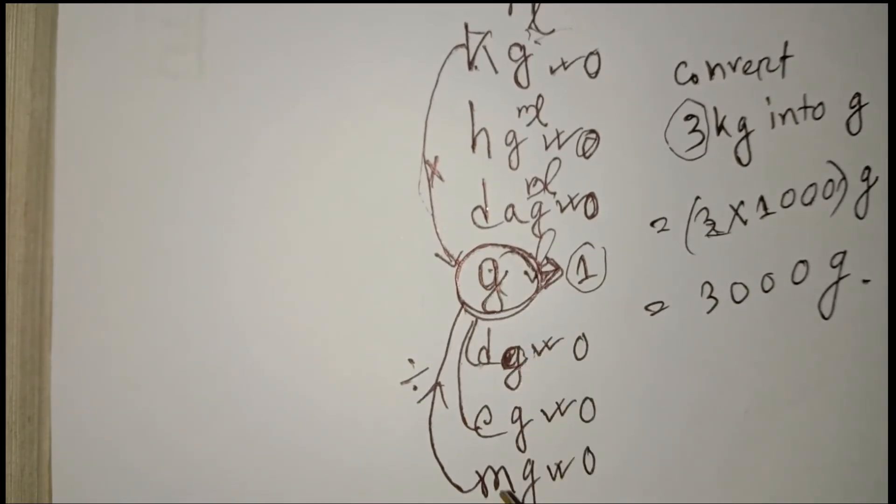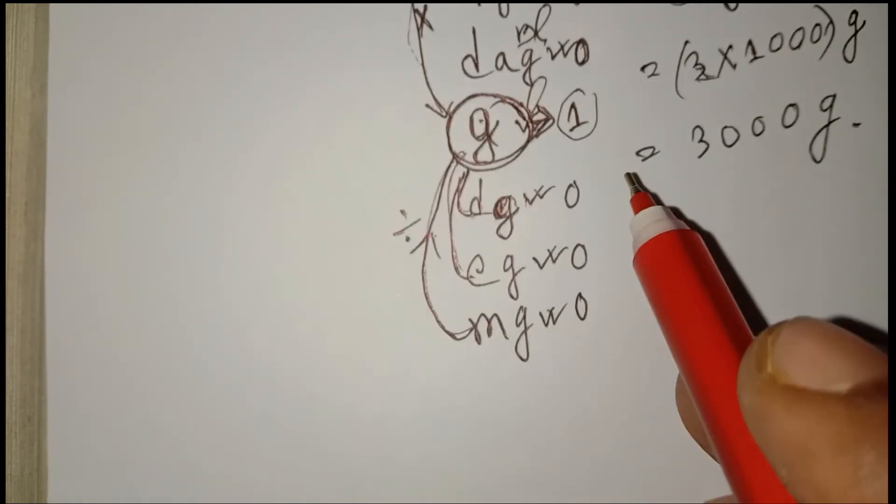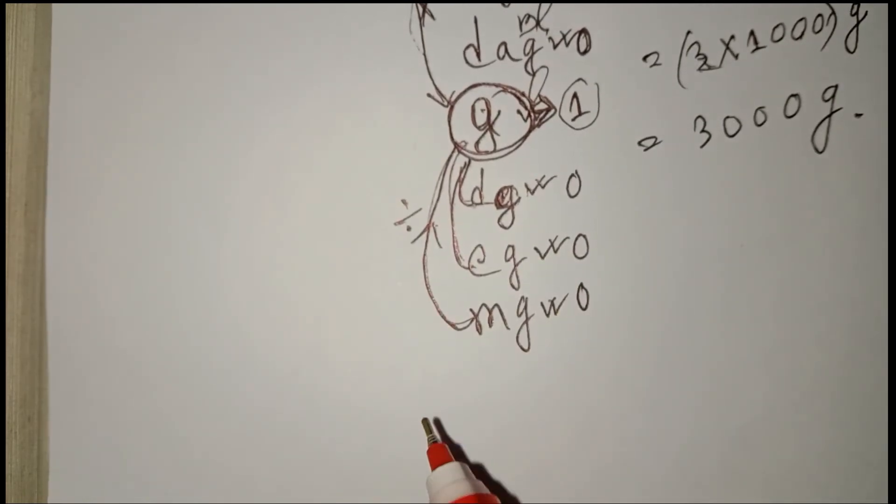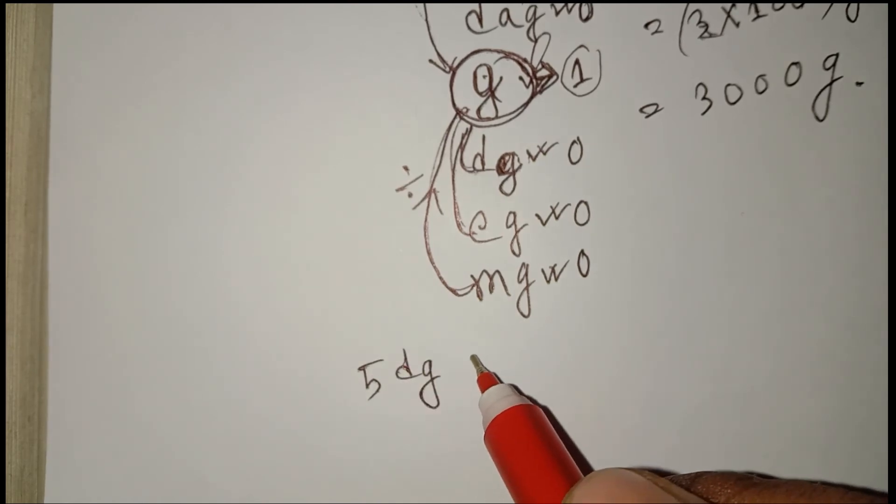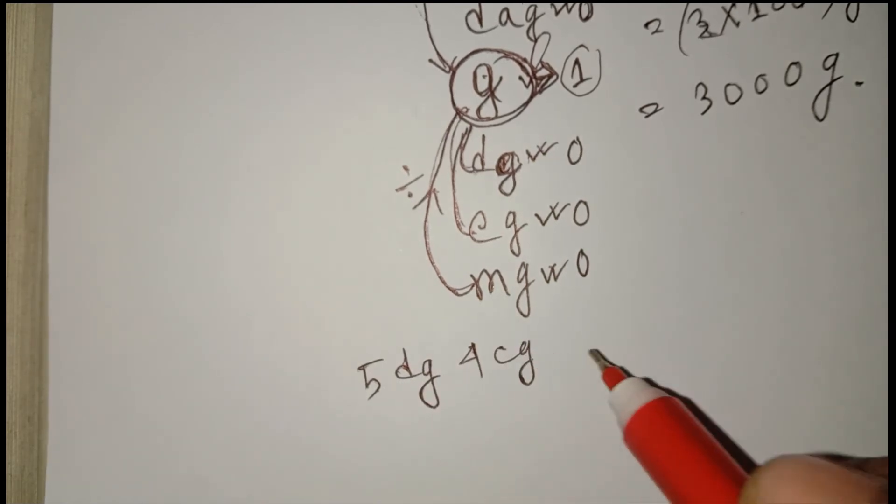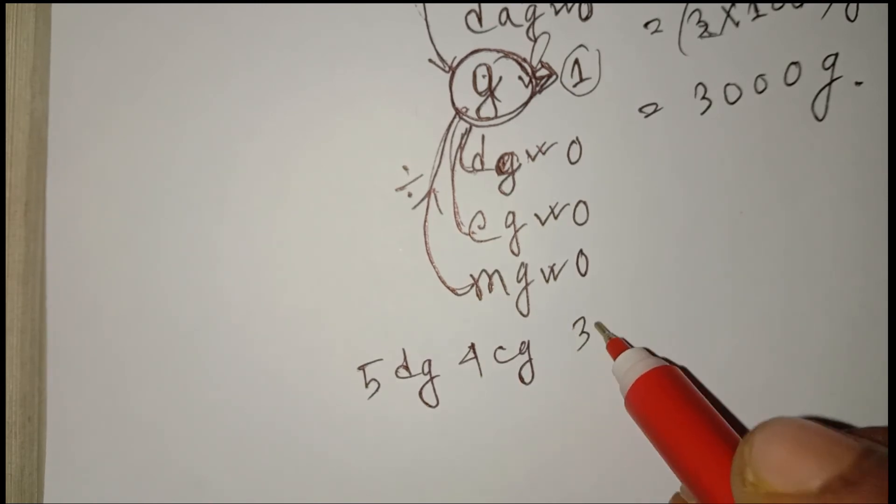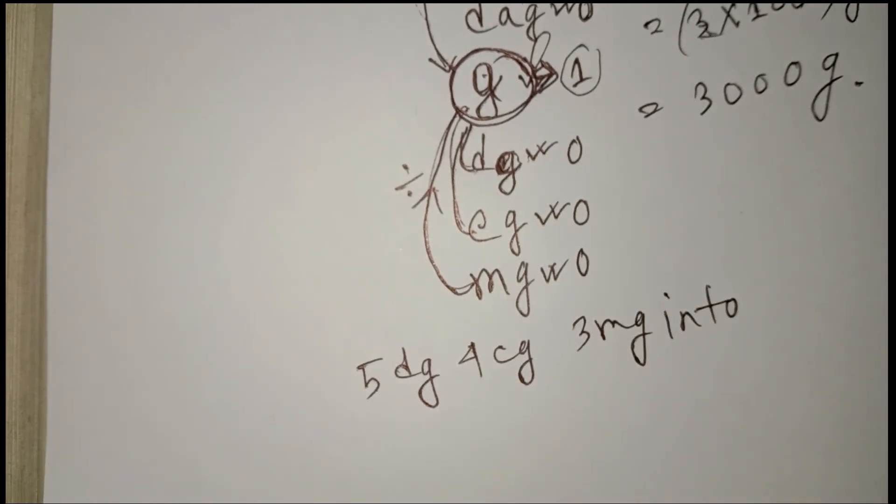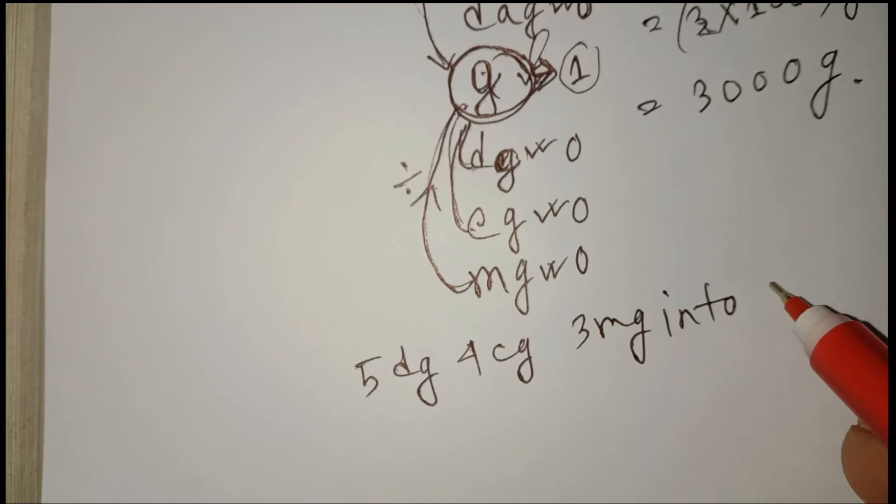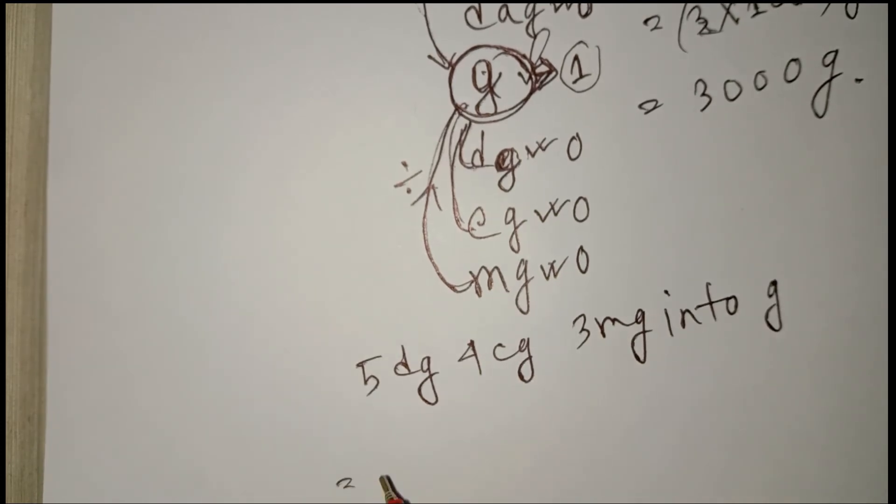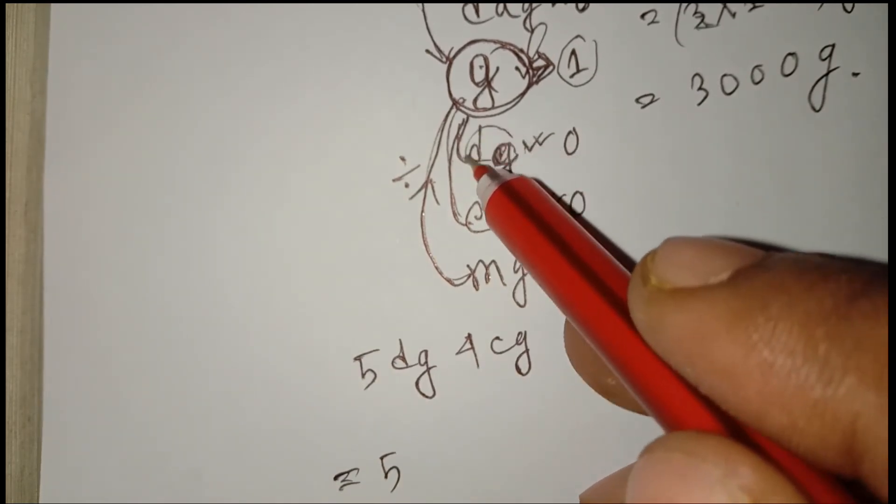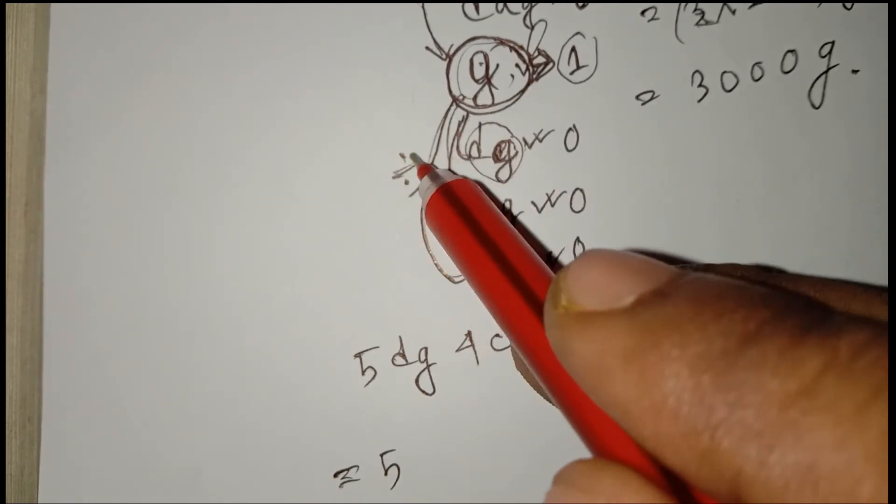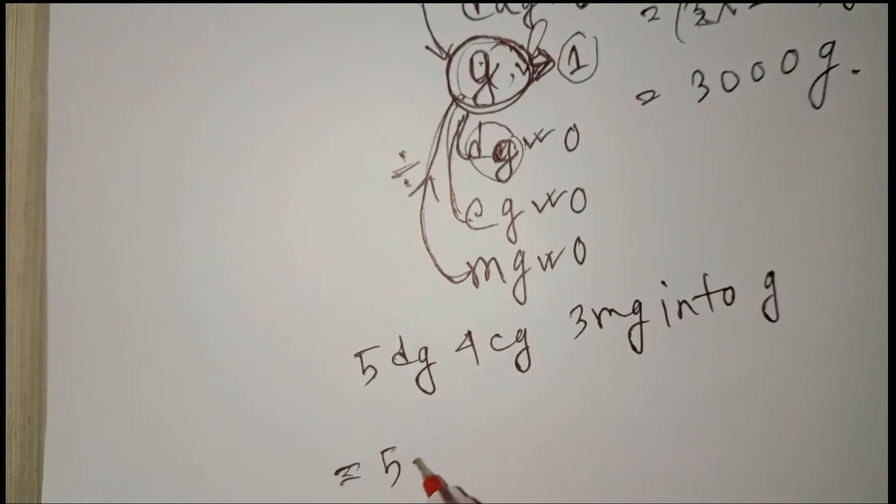If you want to transfer from milligram, decagram, or gram: how to convert 5 dg, 4 cg, 3 mg into gram? See, dg is less than gram, so we divide.